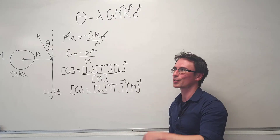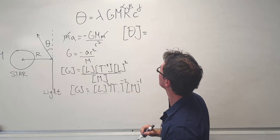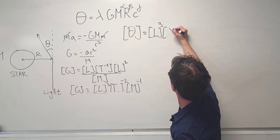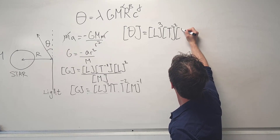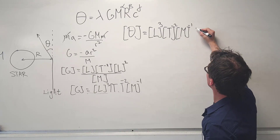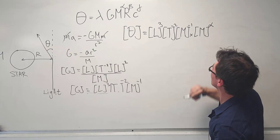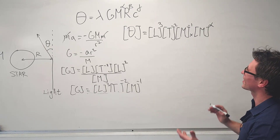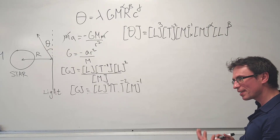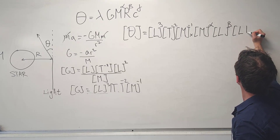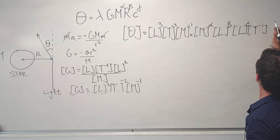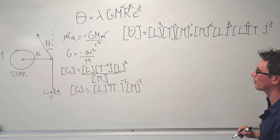Now we can write out the dimensional equation for the angle. Lambda has no dimensions. G has dimensions L³ · T⁻² · M⁻¹. M is the mass, so it contributes M^α. R is distance, contributing L^β. C is the speed of light, with dimensions L · T⁻¹, both raised to the power of gamma, giving T^(−γ).